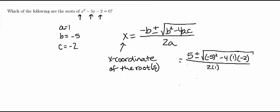So now we're going to get 5 plus or minus the square root of 25 plus 8 because you have negative 4 times 1 is negative 4 times a negative 2 is plus 8. This is all over 2.